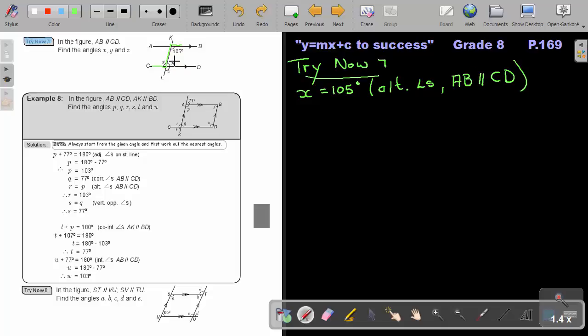Okay. Then we're going to look at angle Y. So basically, we can again work with the 105. But now we can say, I'm just going to take another color. Can you see? This is co-interior. So I can say, Y plus 105 will be equal to 180 degrees. And why? Because co-interior angles. And again, AB is parallel to CD.